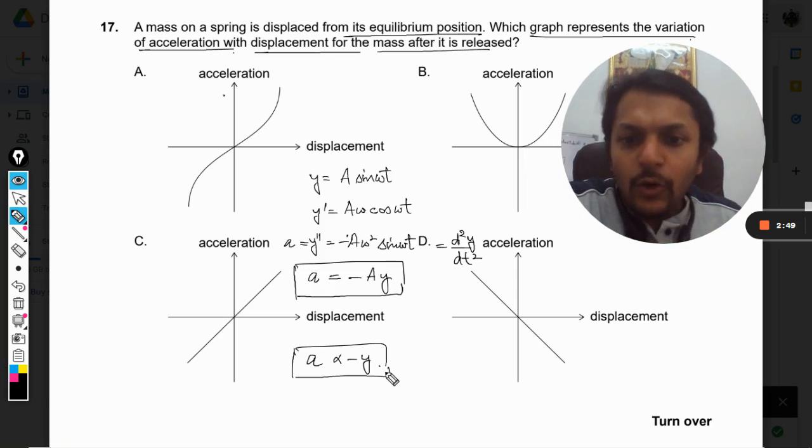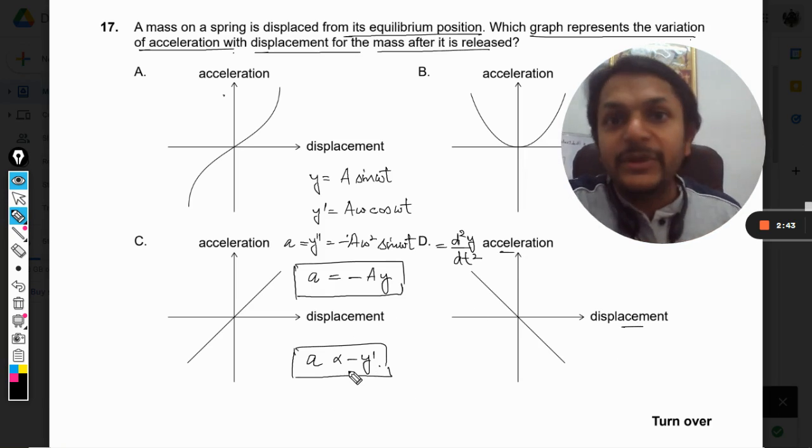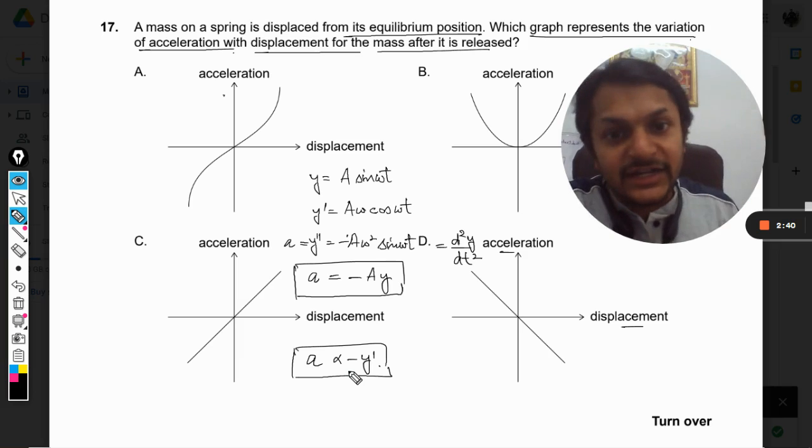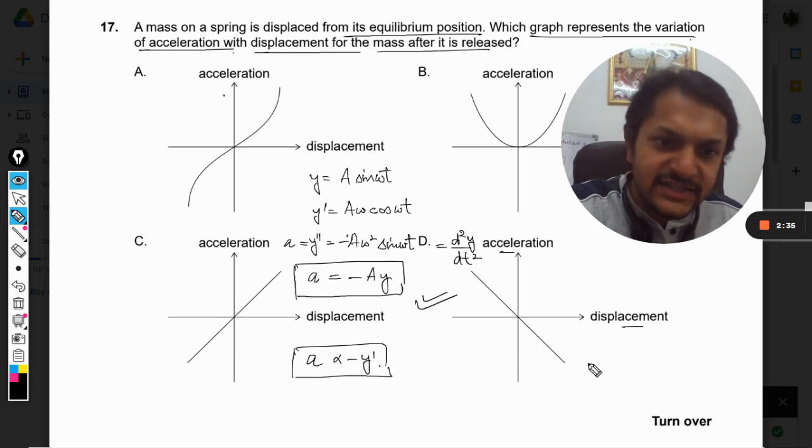Now what will be the graph of this? Obviously, acceleration on the y-axis and displacement on the x-axis. It will become a straight line with a negative slope, so our answer will be D. This is the correct graph.